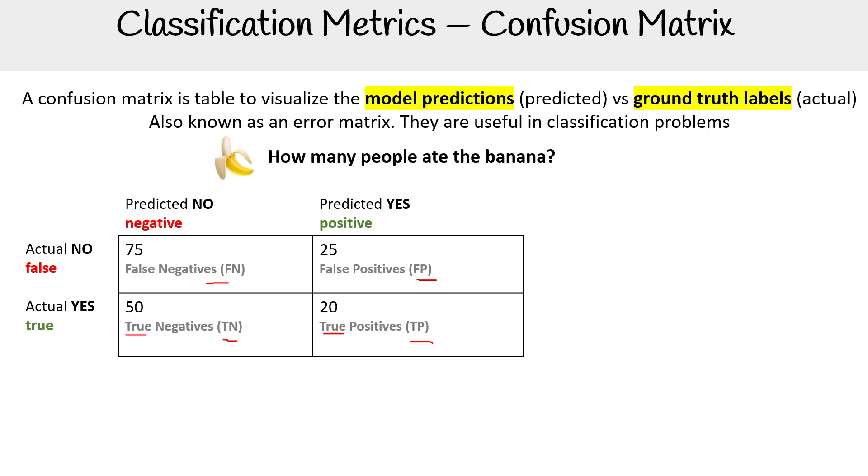That means that in our ground truth data, the data that we labeled that we know the answer is correct, that it matched up. So we say in our data set that there are these people that said they did eat the banana, and then our prediction also said they ate the banana, then that's our score here that 20 predictions were correct.